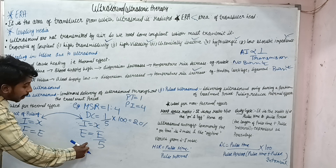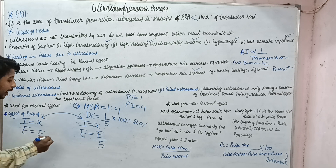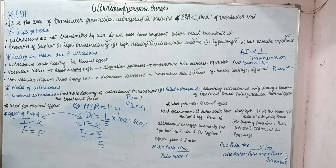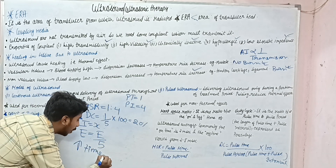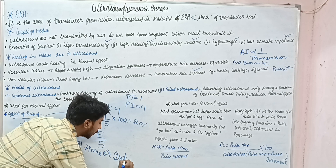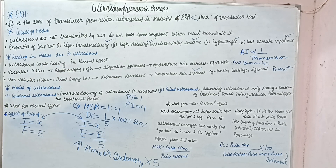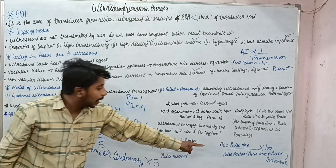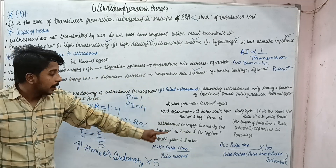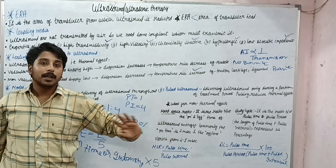To deliver the same energy E in pulsed mode as in continuous mode, we can either increase the intensity by 5 times or increase the treatment time by 5 times. This means higher intensities can be applied safely in pulsed mode. At the same energy, the continuous mode would have a harmful thermal effect on tissue, but pulsed mode allows safe delivery of higher intensity.